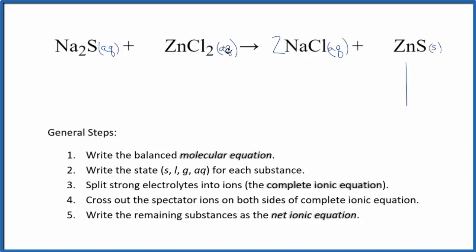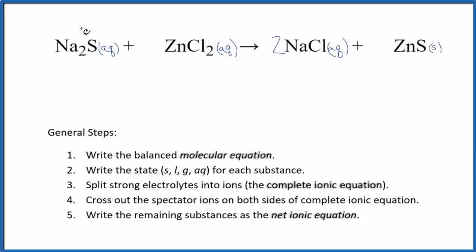So it's going to precipitate out, fall to the bottom of the test tube when these two substances react. We have a precipitate in there, which we need to pay attention to. Now that we have the states, we can split the strong electrolytes into ions — this will be our complete ionic equation. Sodium is in group one on the periodic table; it has a one plus. Sulfide ion is two minus, so I have Na plus.